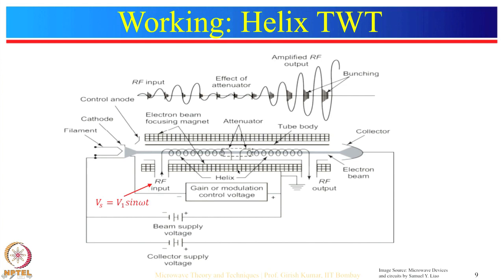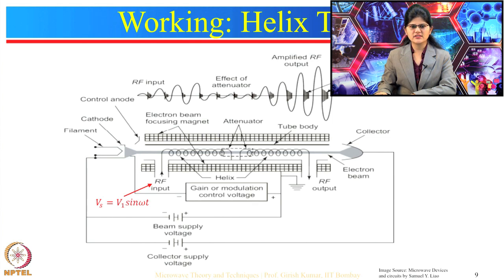Let us see how electrons move in helix travelling wave tubes. Electrons are injected from the cathode and they travel with uniform velocity before entering into the helix structure. After entering into the helix structure, their velocity is modulated. The electron which enters the helix when the field is zero — that electron's velocity will not be changed. The electron which enters when the field is an accelerating field will be accelerated. And the electron which enters when the field is decelerating — the velocity of that electron will be less. Those velocity-modulated electrons will then travel in the RF interaction field.